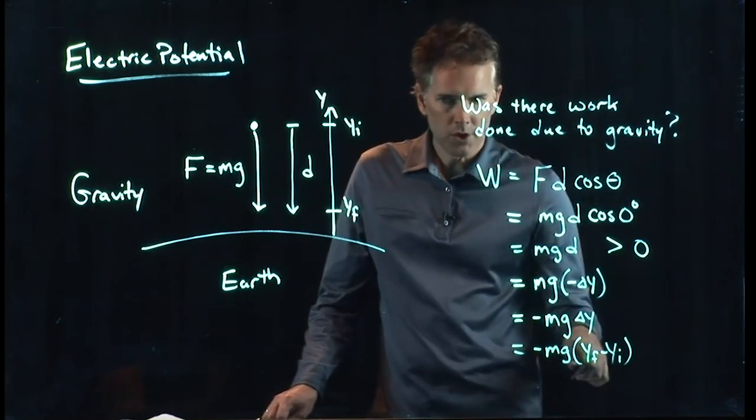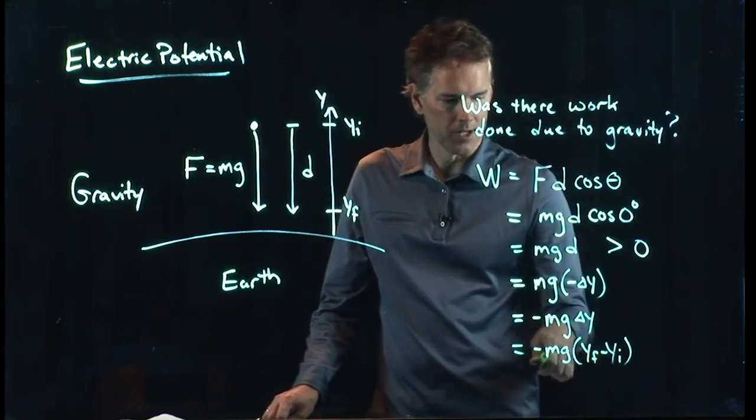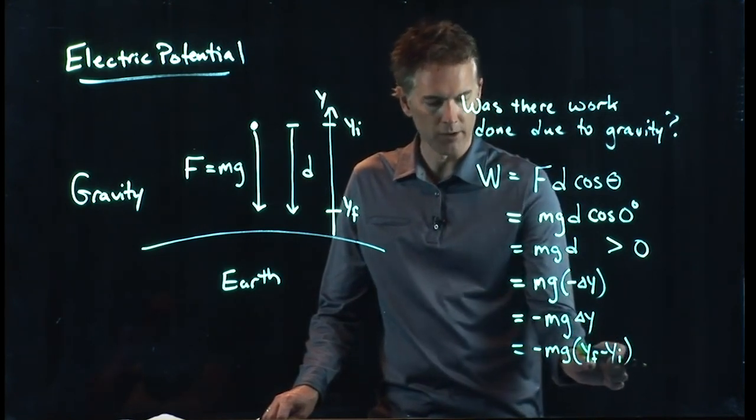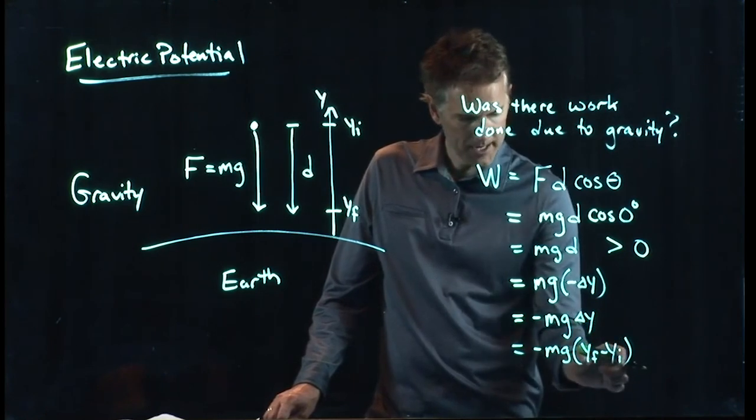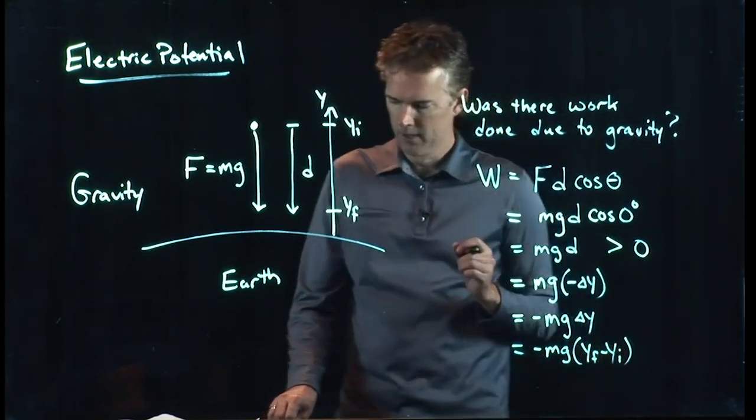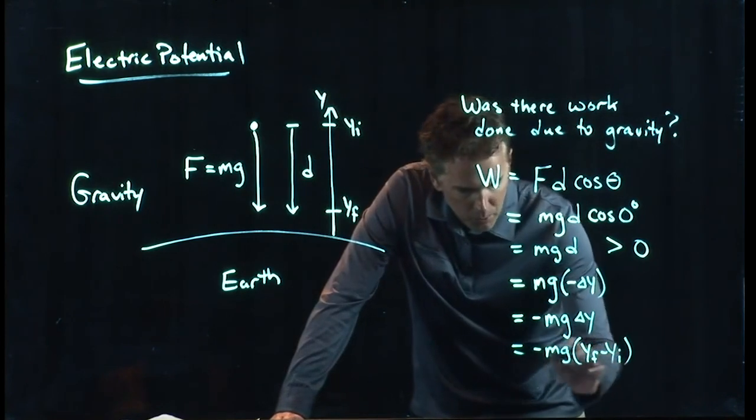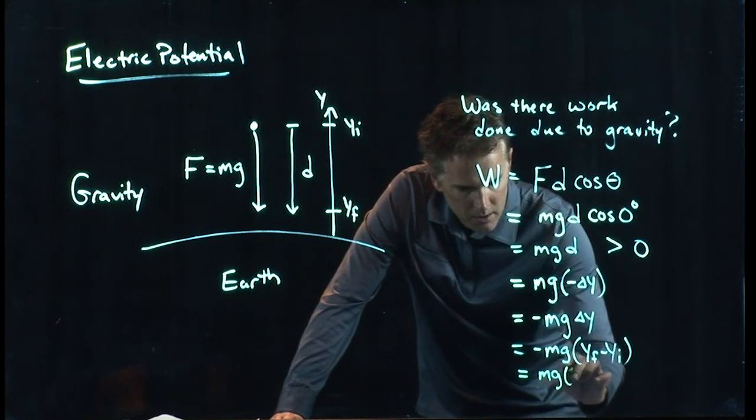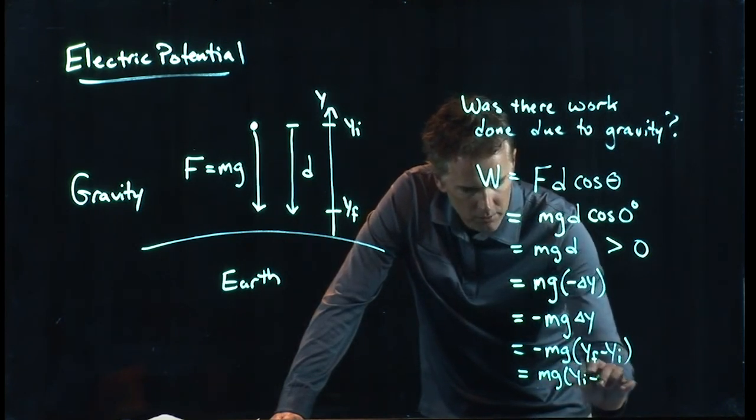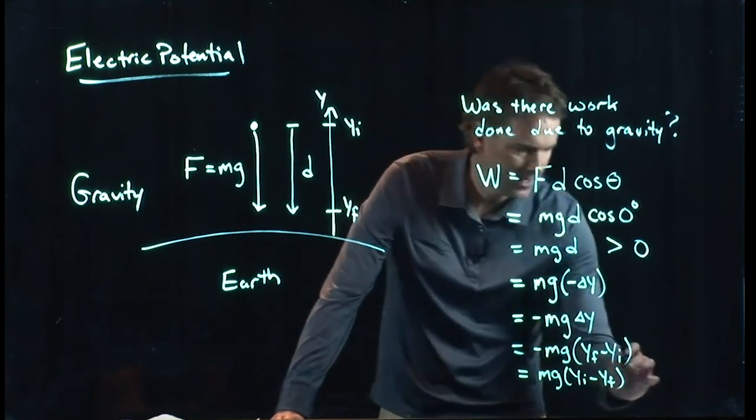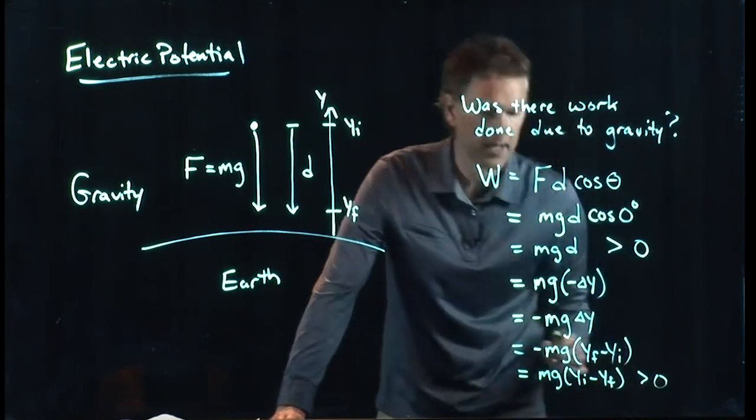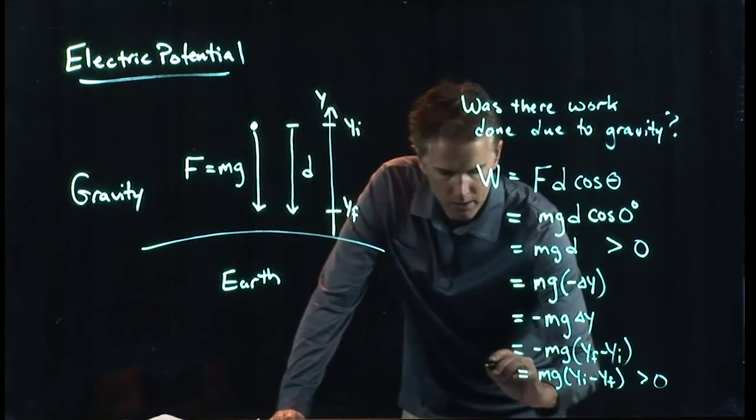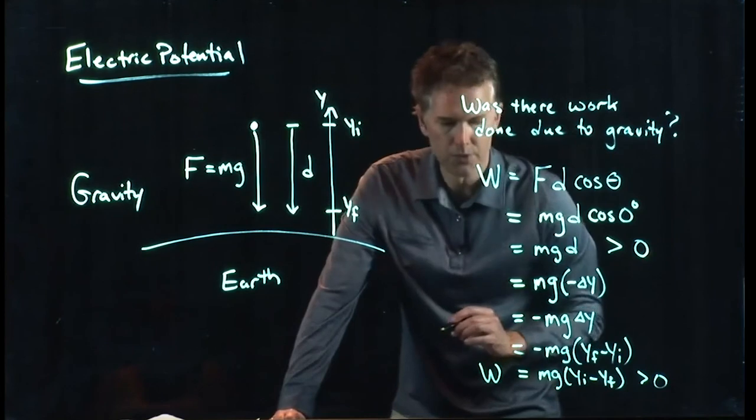And that should be clear why we had to put that negative sign there, because this stuff in parentheses here, that's going to be a negative number. Y final is smaller than Y initial, so that will be a negative number. We have to add another negative to make sure it's a positive number. But now we can work that negative right on through: M G Y initial minus Y final, and that is still a number that is positive. This is the work due to gravity.